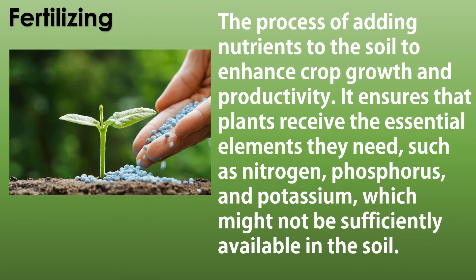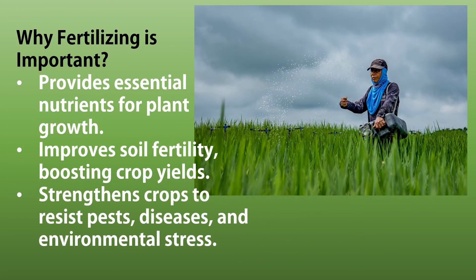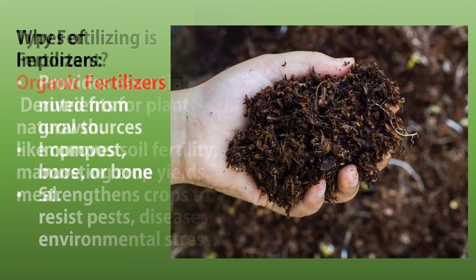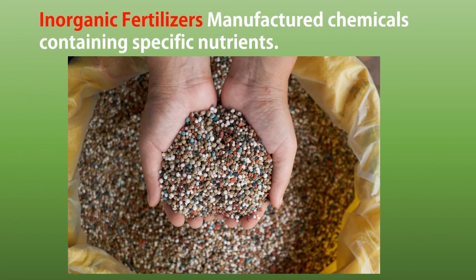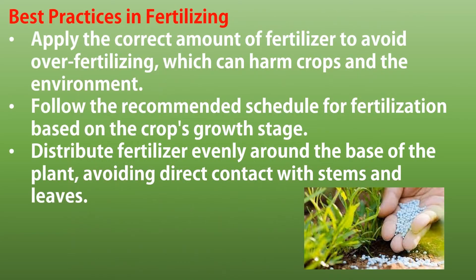Fertilizing is the process of adding nutrients to the soil to enhance crop growth and productivity. It ensures that plants receive essential elements such as nitrogen, phosphorus, and potassium, which might not be sufficiently available in the soil. Fertilizers are classified into two types: organic and inorganic. Unlike inorganic fertilizers, organic fertilizers are naturally derived, eco-friendly, and reduce the risk of water pollution. Using organic fertilizers helps reduce waste by recycling natural materials like food scraps, manure, and plant residues back into the soil.